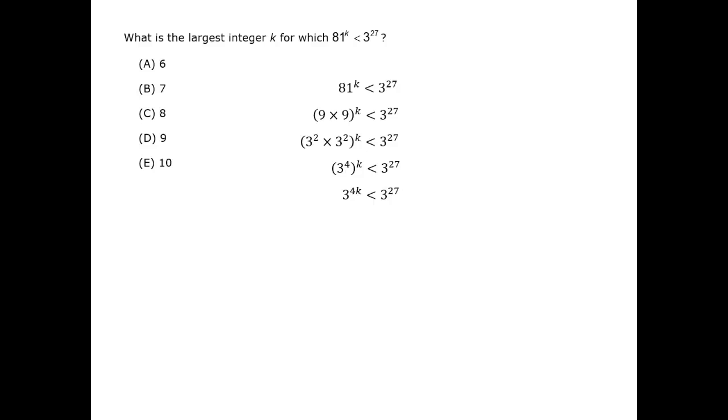Now we can consider some values of k. For example, if k equals 6, then 3 to the 4k is 3 to the 24th power. That's less than 3 to the 27th, which is 3 to the 24th multiplied by 3 more 3's.